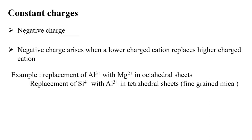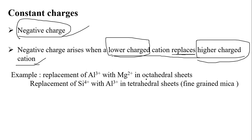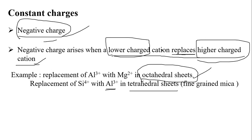In constant charge, negative charges arise when a lower-charged cation replaces a higher-charged cation. The best example is the replacement of aluminium (3+) by magnesium (2+) in the octahedral sheet, which leads to a negative charge. Similarly, replacement of silicon by aluminium in the tetrahedral sheet also produces a negative charge.